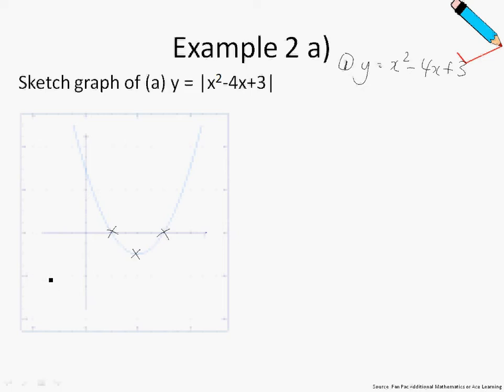First and foremost, I will want to factorize this function over here. So y equals to x squared minus 4x plus 3 can be factorized into x minus 3 and x minus 1.